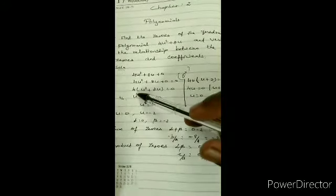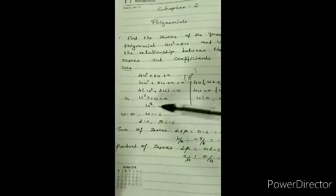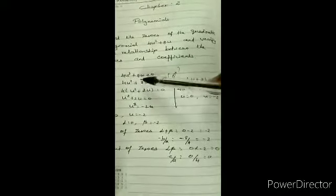Second method: 4 is common. So u square plus 2u equals 0. From this, u square equals minus 2u. So one zero is 0 and another is minus 2. Taking 4u as common: 4u into u plus 2. So either 4u equals 0 or u plus 2 equals 0. From 4u equals 0: u equals 0 divided by 4, so u equals 0. From u plus 2 equals 0: u equals minus 2.